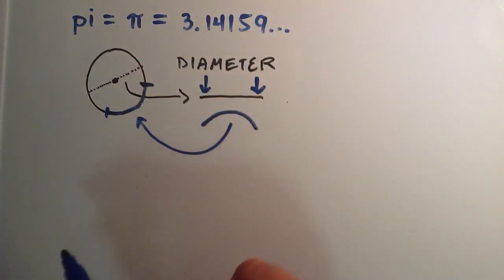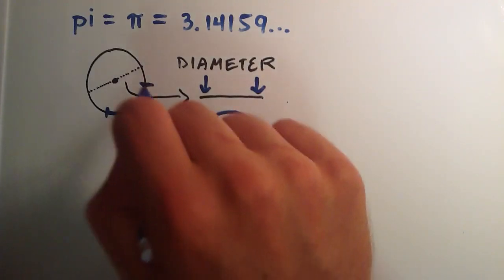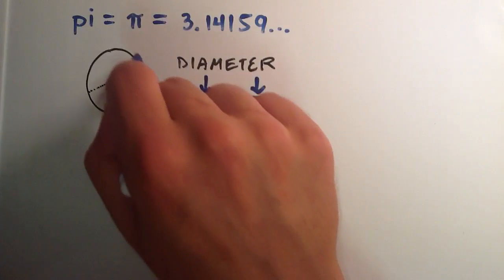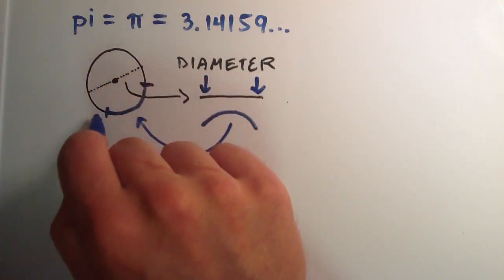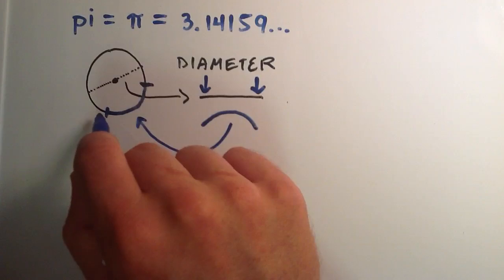What we're trying to do here is we're trying to figure out how many diameters does it take to just be placed on the outside of this circle so that the entire outside or circumference of the circle is covered one time.